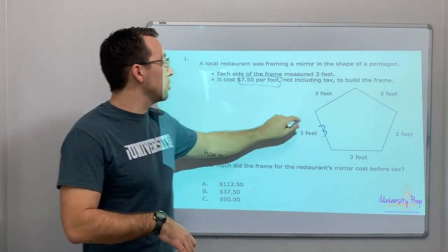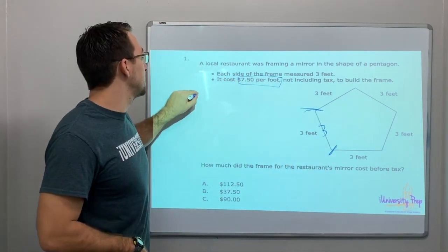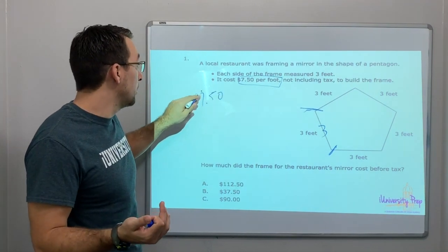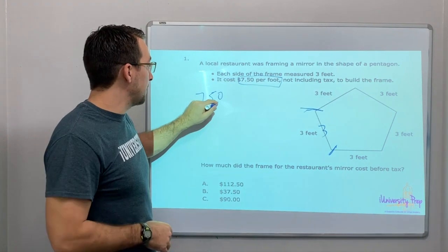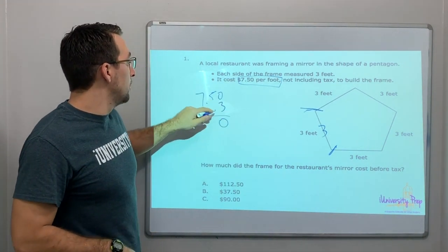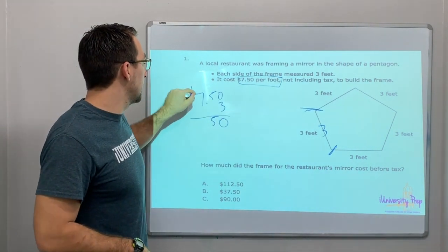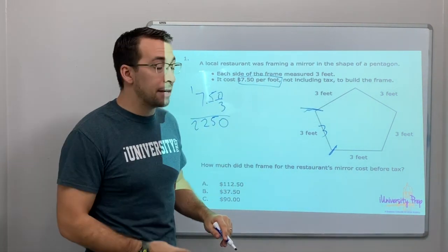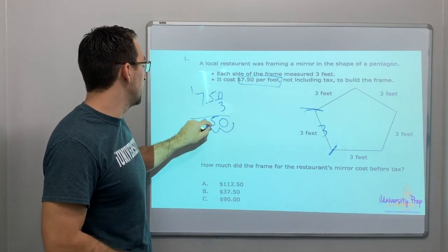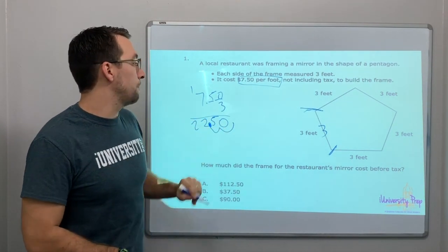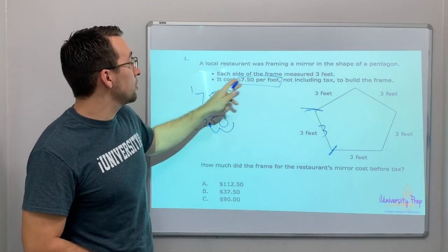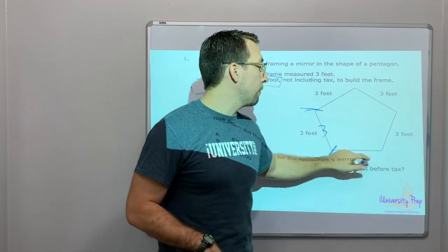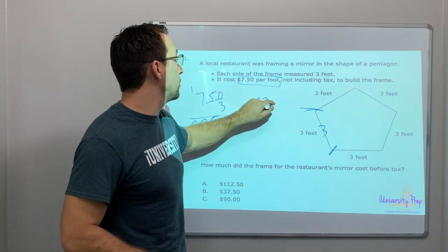Let's do one side first. Because we're talking about the frame all the way around, $7.50 times 3 equals $22.50. How many sides are on a pentagon? Five sides - 1, 2, 3, 4, 5. So let's do $22.50 times 5.